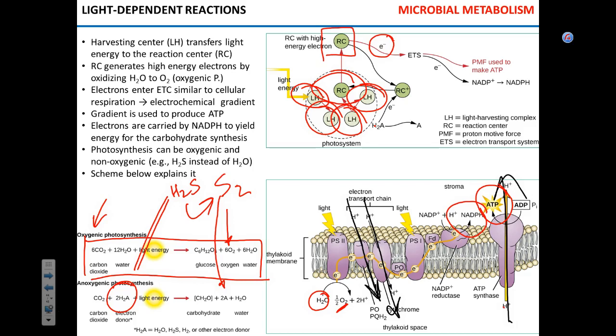Before we move on to the Calvin-Benson cycle, I want to talk about why photosynthesis appeared. It was probably like three and a half billion years ago. Even I wasn't born back then. What was the purpose of photosynthesis? The sun's a constant energy supply, so in terms of efficiency and availability it would make sense. Light energy is practically limitless.